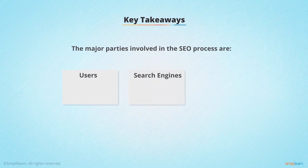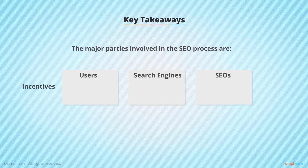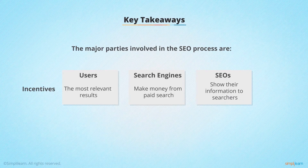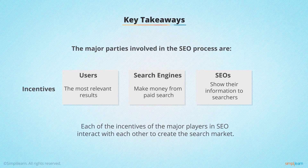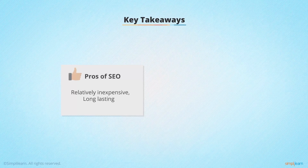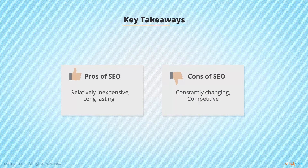To summarize: users, search engines, and SEOs are the three major parties involved in the SEO process. Regarding incentives — users want the most relevant result, search engines want to make money from advertisements, and SEOs want to show their information to searchers. Each of these incentives interacts with the others to create the search market. As for SEO compared to other channels: it is relatively inexpensive and long-lasting, but it is constantly changing and quite competitive.